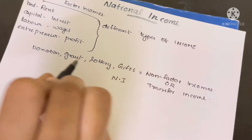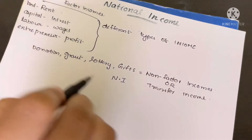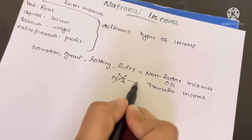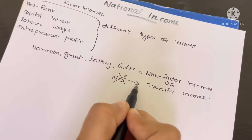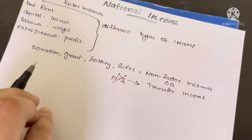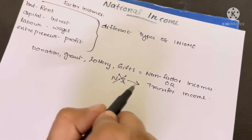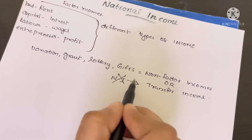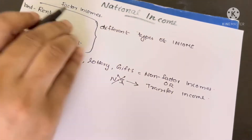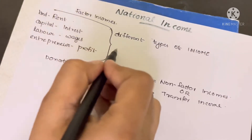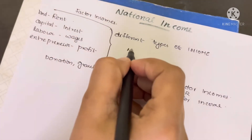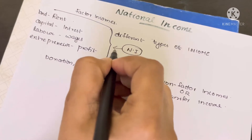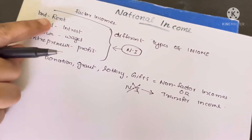Transfer income is also called non-factor income. National income is calculated based on factor income — that is, rent, interest, wages, and profit — not transfer income.